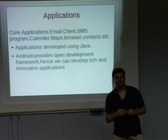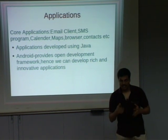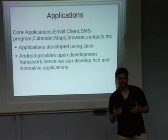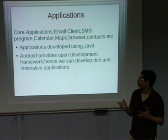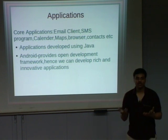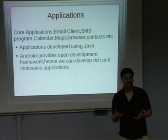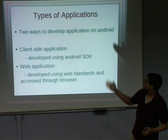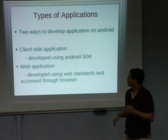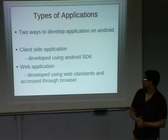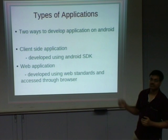There are currently a total of 5 lakh apps in Android. These many apps are possible on Android just because Android provides an open development framework, so that whatever innovative thoughts you have, you can develop an application. One type is called native applications, developed using the Android SDK, and the other is web applications.